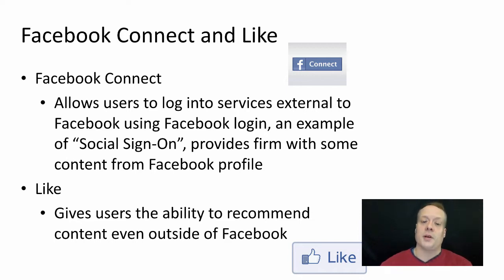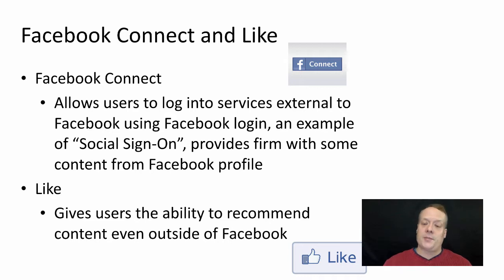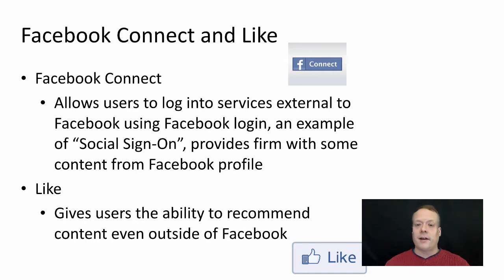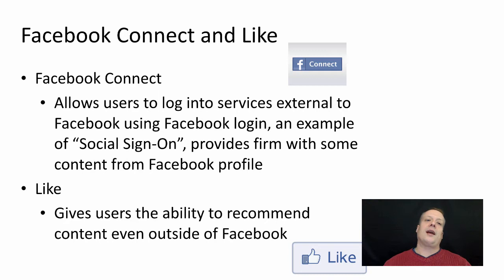If you want more additional information about your users that's available through Facebook, you can use things like Facebook Connect, also known as a social sign-on platform. That allows users to log into your website using their Facebook credentials, which means they don't have to create a new credential set for your website — something that prevents people from using systems because they don't want to go through the arduous task of building yet another sign-on. So by using this, it makes it easier for them to access. And depending upon how you have the permissions set up with Facebook Connect, you can get access to additional information about that person automatically.